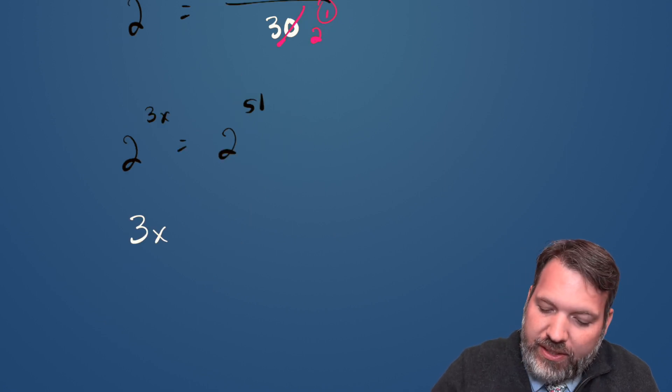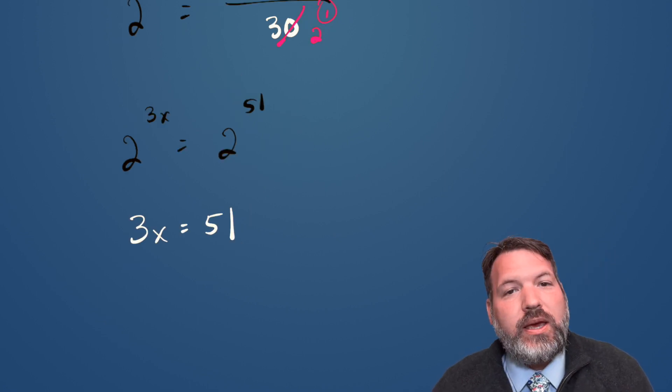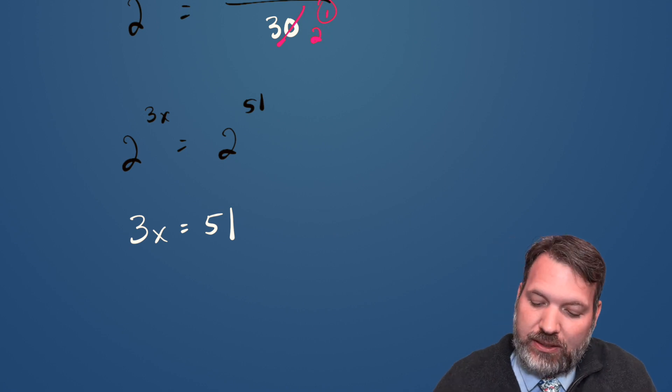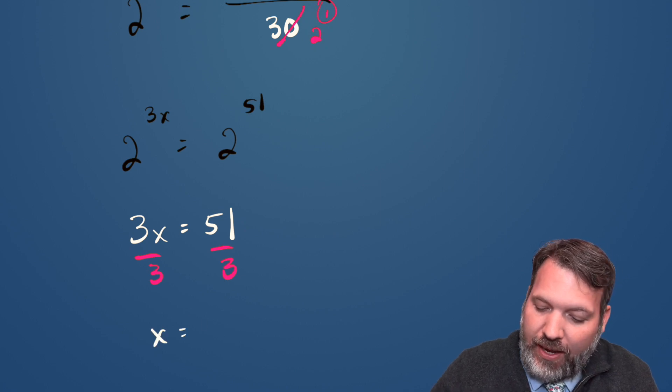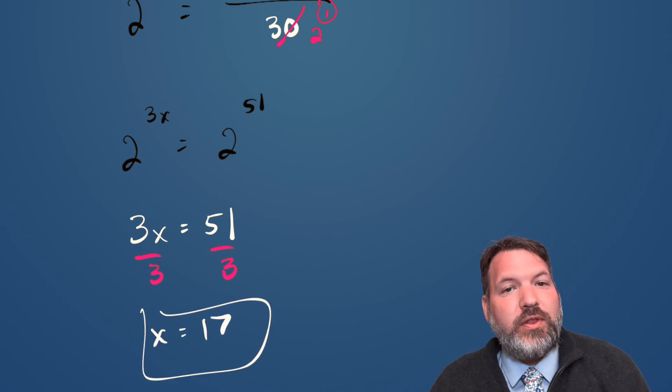At this stage, we really don't need the bases anymore. Instead, it is simply the case that that exponent 3x needs to be equal to 51. We can divide by 3, divide by 3, and get x equals 17.